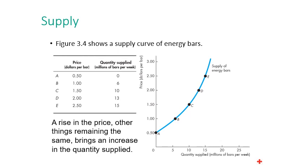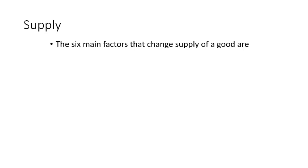There are many factors that could cause a shift in the supply curve. We will focus on six. The first is the prices of factors of production: if inputs like labor or raw materials change in price, this changes the cost of production and therefore changes supply itself.